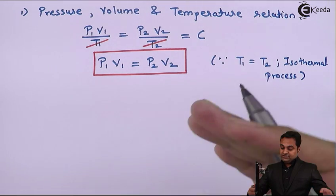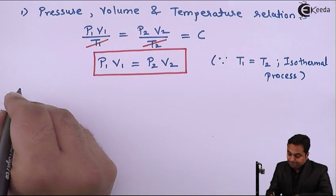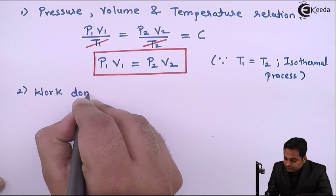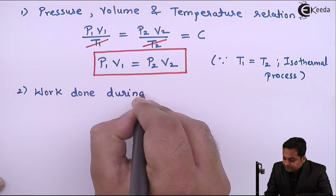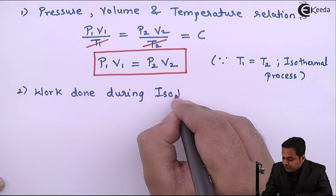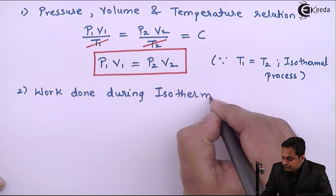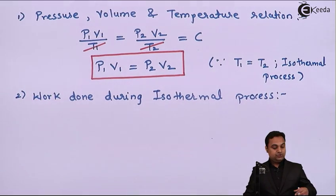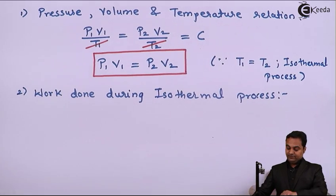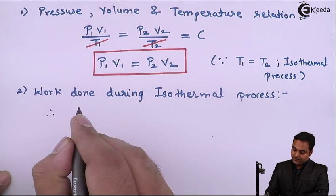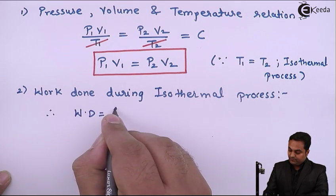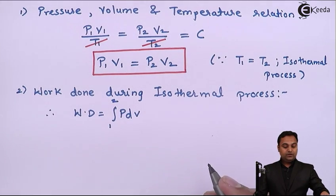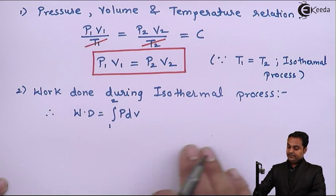Next, the work done during the isothermal expansion process. The general equation for work done is W = ∫P dV, integrated from state 1 to state 2. To evaluate this, I will use the characteristic gas equation on the side.